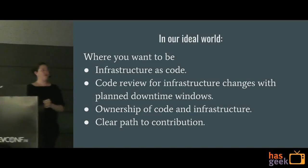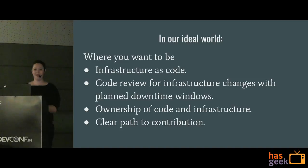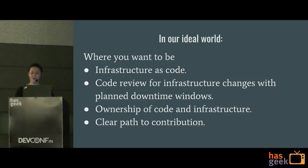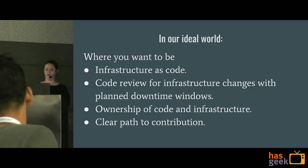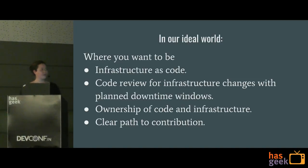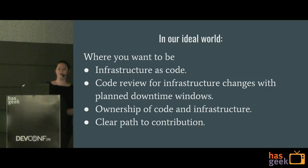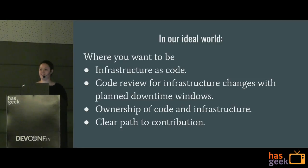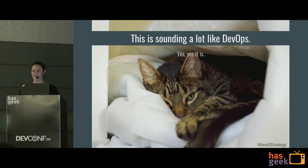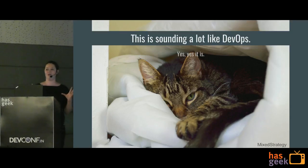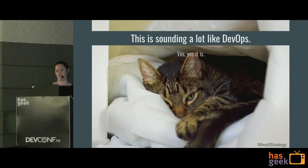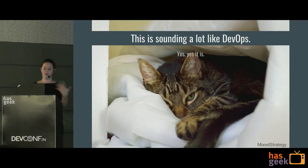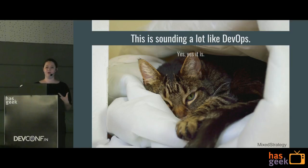One of the pieces we've moved towards — and this may be shocking as a DevOps piece — is we now look at our infrastructure as code. It should be as easy to contribute to the infrastructure as code, and it should also be just that hard. We now do things like code review for infrastructure changes and downtime windows. We want to know who owns all of this and make sure this clear path to contribution makes sense. It sounds a lot like DevOps because it is — it's a way to combine the work your developers are doing with the real-world knowledge your operations team has, and when you describe your infrastructure as code, it becomes a lot easier to contribute.